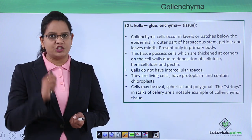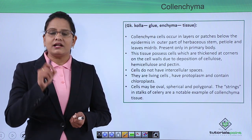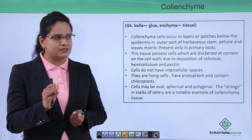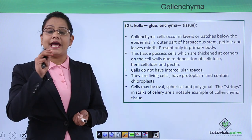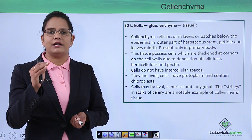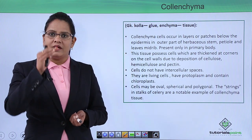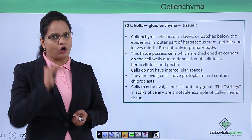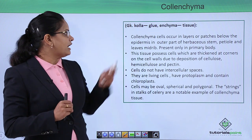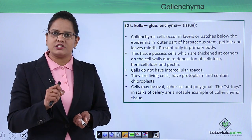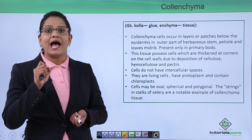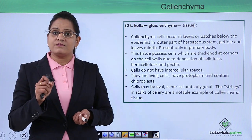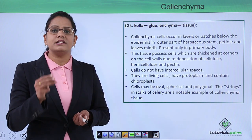Colenchyma cells are present in the form of layers or patches below the epidermis — that is, the outer layer of any stem. They are found right below the epidermal layer, in the outer part of herbaceous stems, in petioles, and in the midribs of leaves. They are always present in the primary body, that is, the young form of plants.